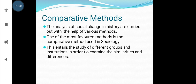The analysis of social change in history is carried out with the help of various methods. We are using different methods — not only comparative methods, but also exploratory or descriptive method, case study method, and survey method. One of the most prominent methods is the comparative method used in sociology. This method entails the study of different groups and institutions in order to examine their similarities and differences.